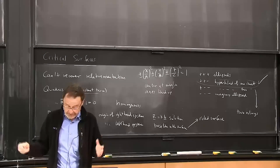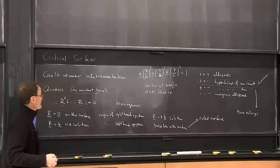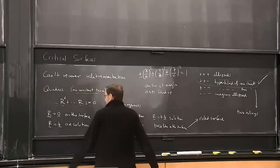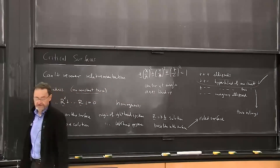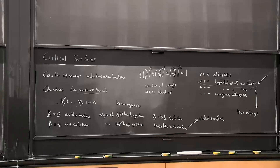It seems like a very special case — why are we worrying about it? Well, this is the general equation for the quadric, but it also covers a large number of special cases: parabolic hyperboloids and others. You can find the whole list of special cases online.